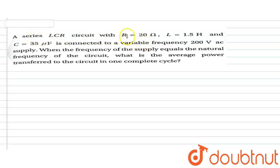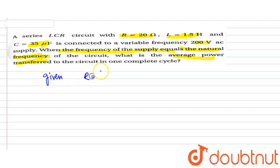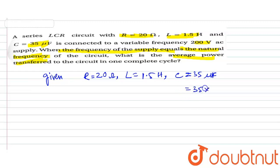The question is 20. The inductance is 1.5, the inductance is 35. So let's start with the question. What is given: resistance R is equal to 20 ohm, L is equal to 1.5 H, and capacitance C is equal to 35 mF. We will do it in micro-F, so this will be 35 into 10 to the power minus 6.